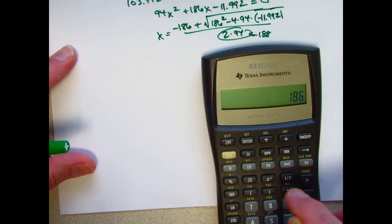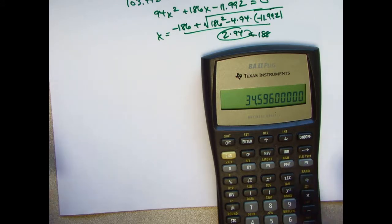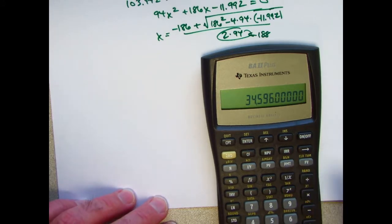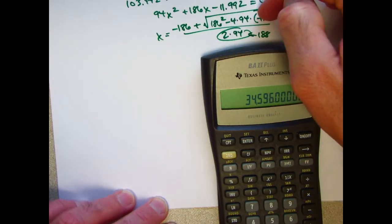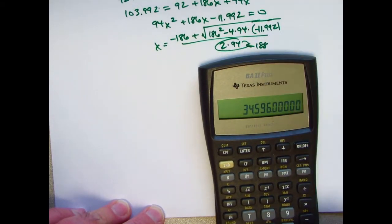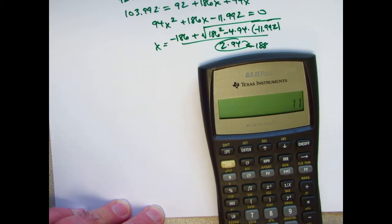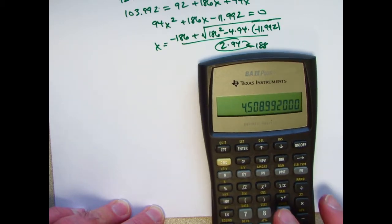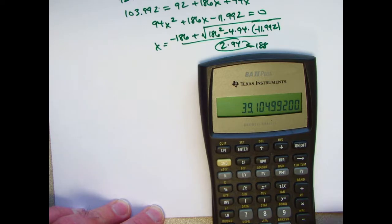186 squared is 34,596. I think I'll solve this without writing anything more down. I'll store this in register 0. I've got two minus signs making a plus. I can just do 4 times 94 times 11.992. Two minus signs again making a plus. Add this to what's in register 0. Take the square root.